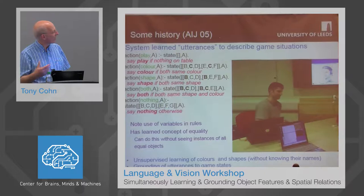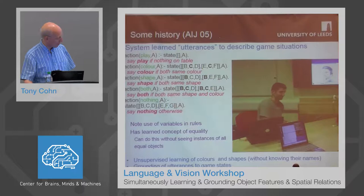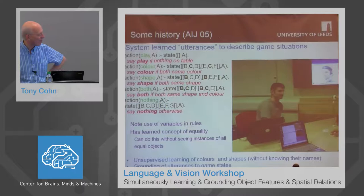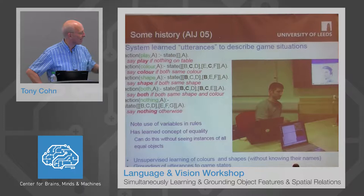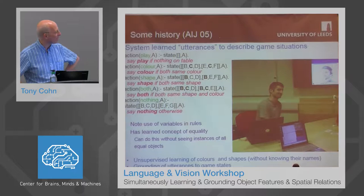What it did was to learn rules using an inductive logic programming system. In black here you can see the actual ILP system rules, and the English translations of them. This is actually not for that game — it's for a slightly different game, a simplified version of a game called Uno, where you had cards of either the same shape or the same colour, and it had to learn the rules of whether to say same colour, same shape, or neither.